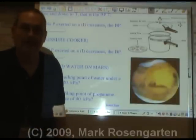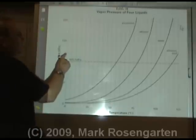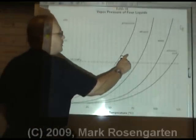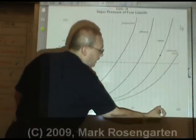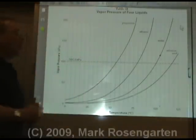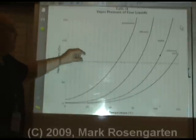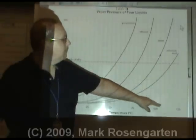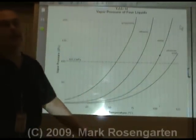On Mars, water goes directly from ice to gas. So what is the boiling point of water under a pressure of 120 kilopascals? We find 120 kilopascals on the y-axis, go across to the water line, then drop down to the temperature axis — that puts us at about 104 degrees Celsius. By raising the pressure to 120 kilopascals, the boiling point goes up from 100 to about 104 degrees, and you're cooking at a hotter temperature.